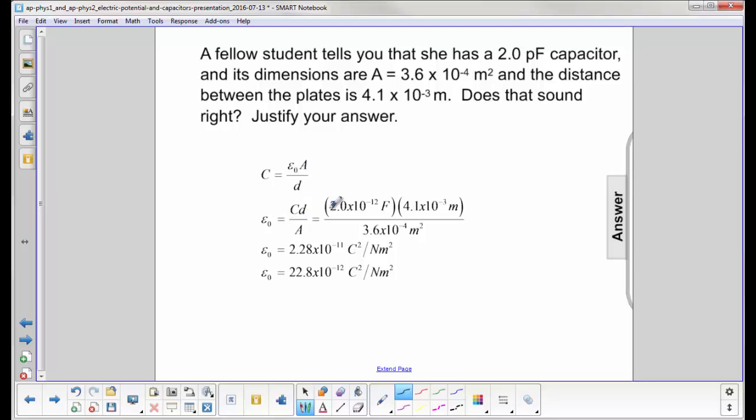We solve for epsilon 0, we multiply through, and we get 2.28 times 10 to the minus 11th coulomb squared per newton meter squared. Now we're just going to move the decimal. You move it to the right, you decrease the power, and that'll be clear shortly why we're doing it, so we get 22.8 times 10 to the minus 12th.